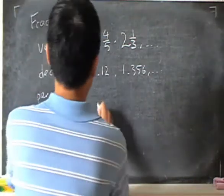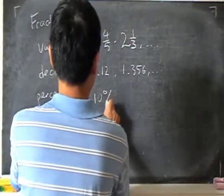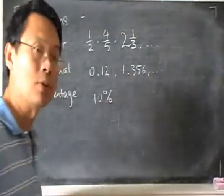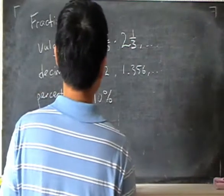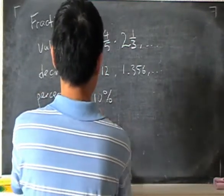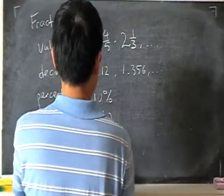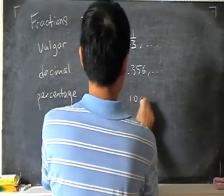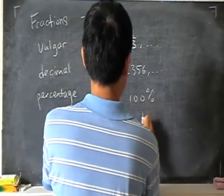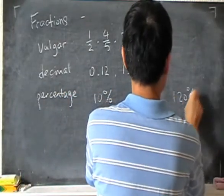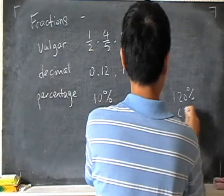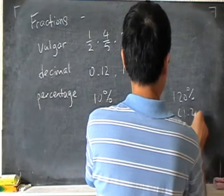Now the idea of a percentage. Say if I have 10%, what that really means is 1 over 10. If I have 100%, it means the same as 1, and if I have say 120%, that's the same as 1.2.